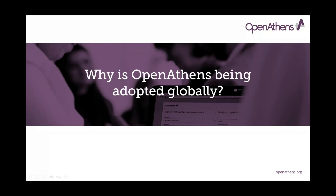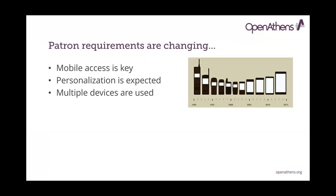User and patron requirements are changing all the time. Mobile access is key — users want to access content from anywhere, not just sitting at a library computer. With OpenAthens this is very possible. Personalization is also expected, just as on Netflix you get recommendations based on what you've watched. Publishers are now doing the same on their sites. Users also carry multiple devices — phones, tablets, laptops — and we need a system that works across all of them.